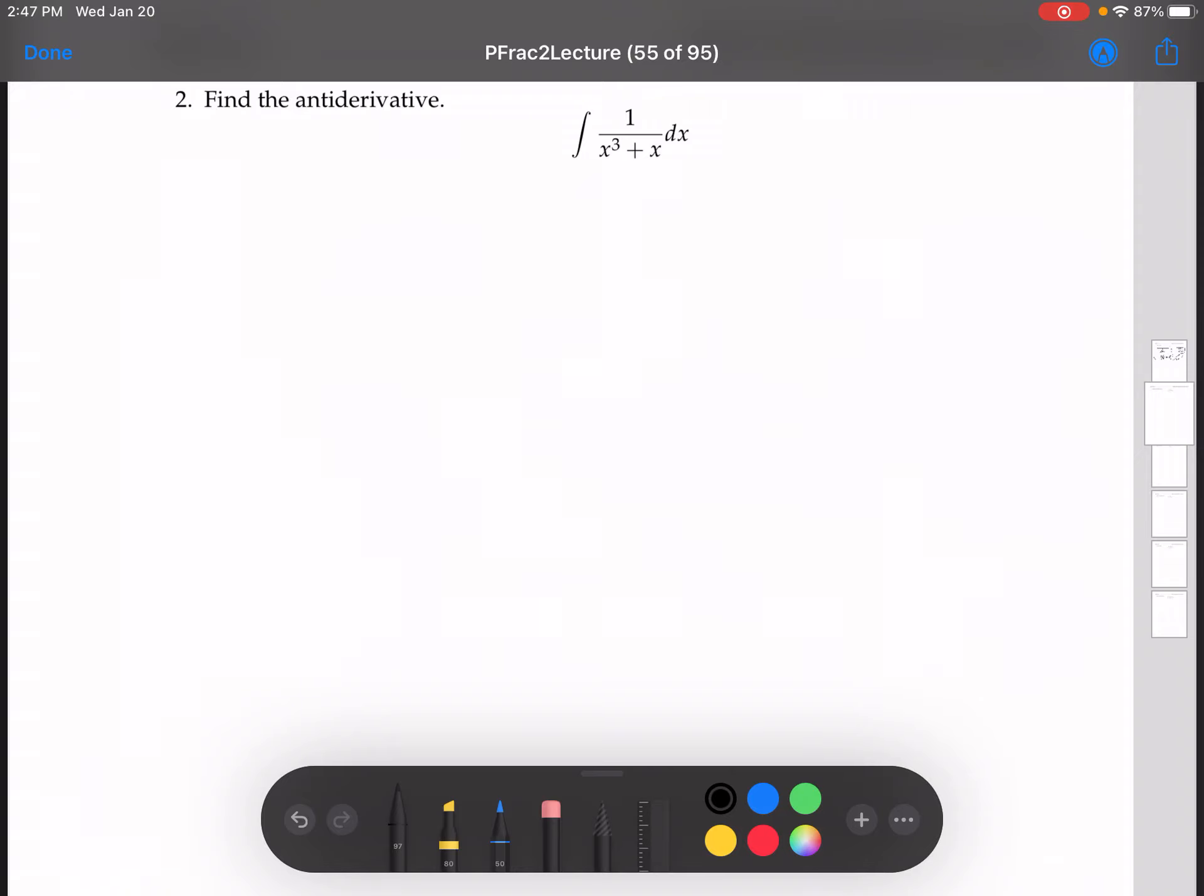All right, so from the previous video, we found that 1 over x cubed plus x was equal to 1 over x plus negative x over x squared plus 1. And remember, we did check that this was correct.